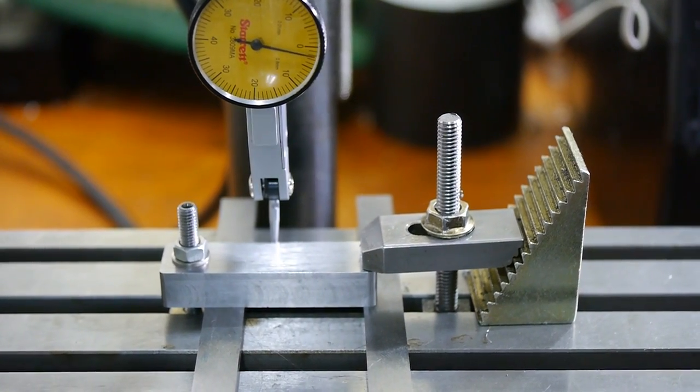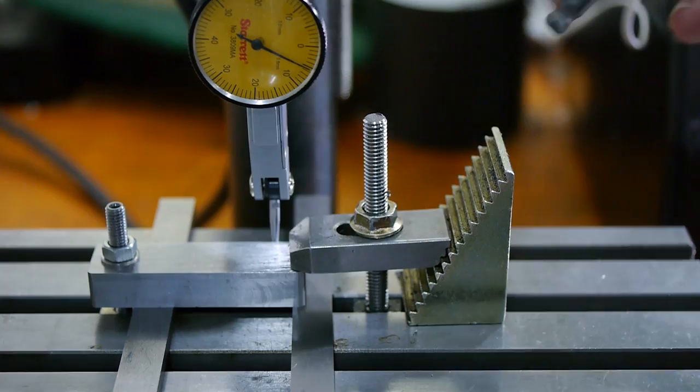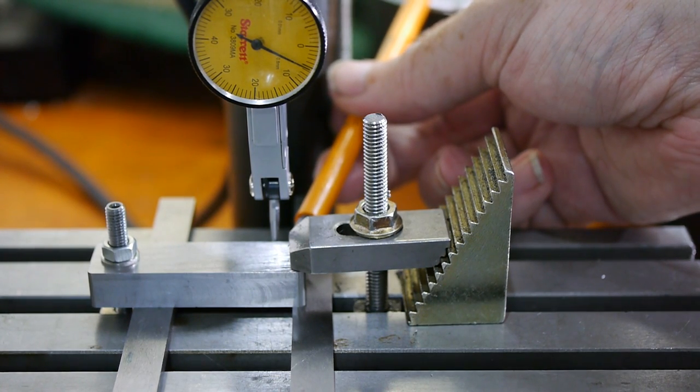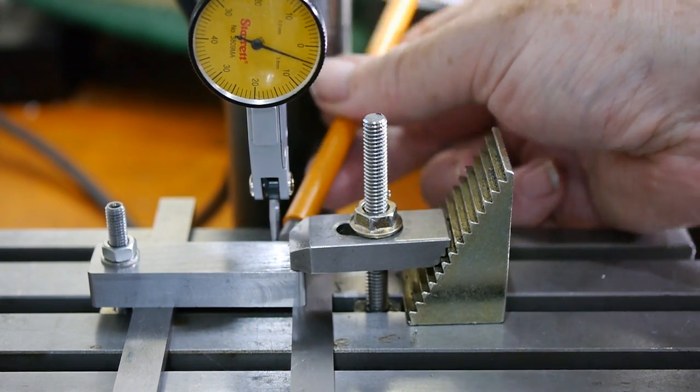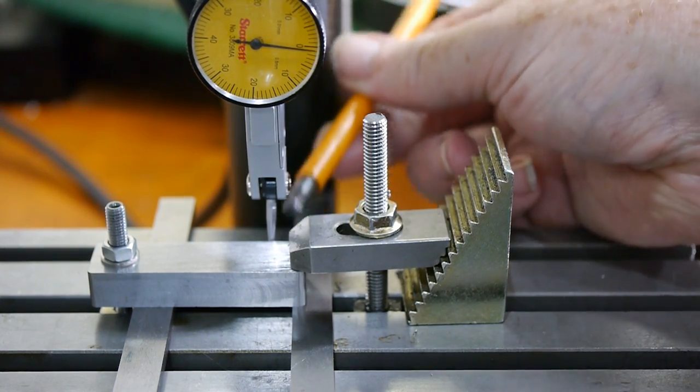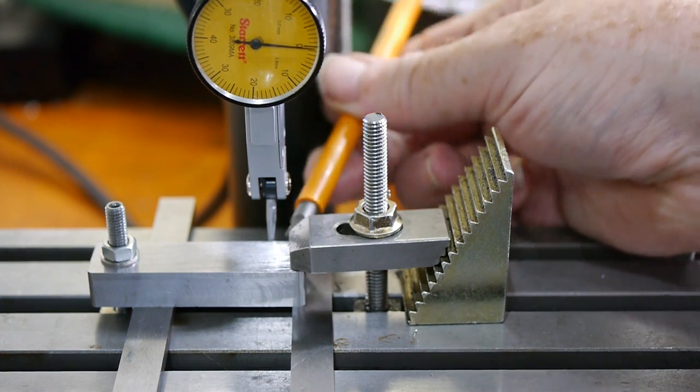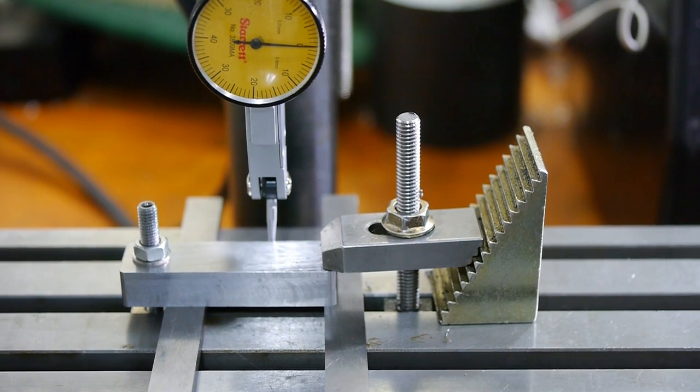To make sure the slot was straight, I used an indicator to tram the edge of the part, to be parallel to the axis of the table. It was tricky to tap the part into place without knocking the indicator, but after about three passes I got it to within a hundredth of a millimeter.